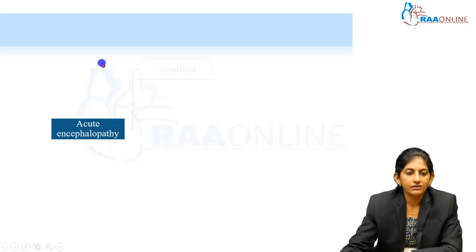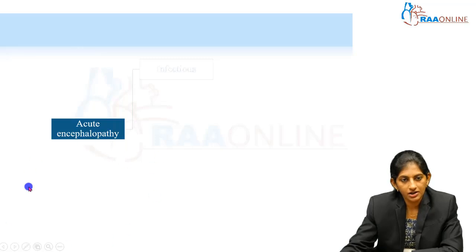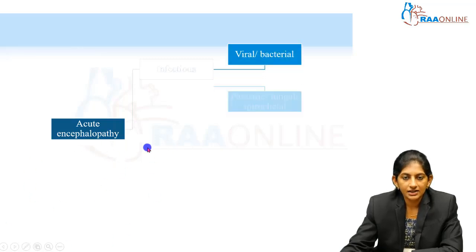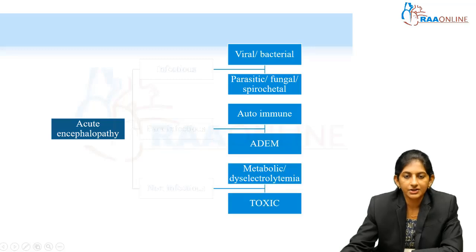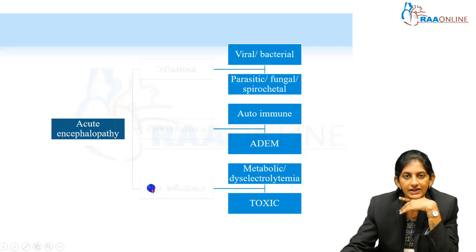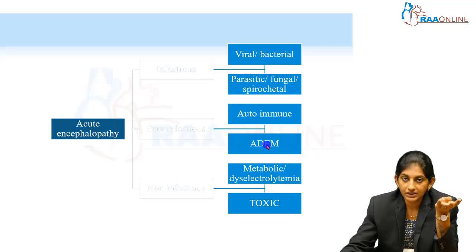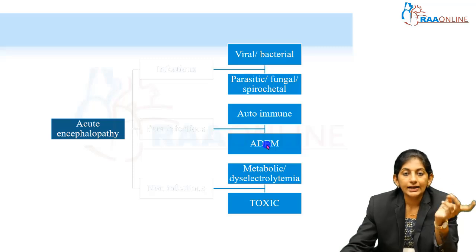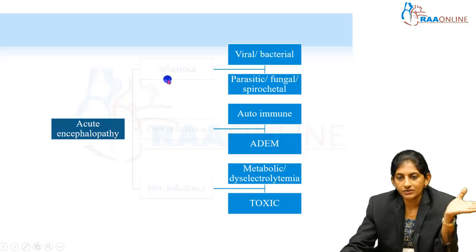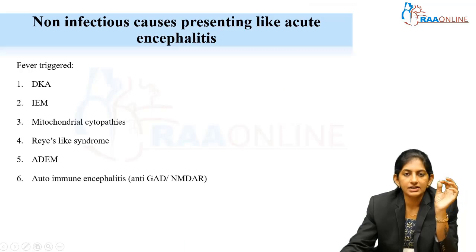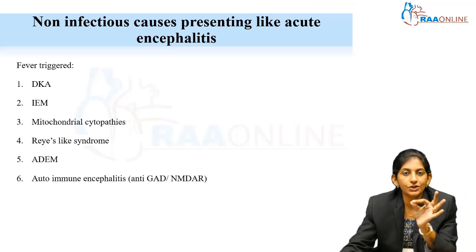When we have a child with acute encephalopathy — that is, an alteration in mental status — you can divide the causes as either infectious, para-infectious, or non-infectious. Non-infectious causes include ADEM, which is a demyelinating disorder, autoimmune encephalitis, and toxins that can cause encephalopathy. Metabolic disorders and electrolyte abnormalities also fall under these. Infectious encephalopathy includes viral, bacterial, parasitic, and even fungal causes — all can present as acute encephalopathy.